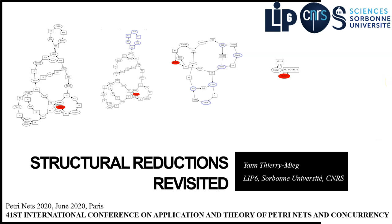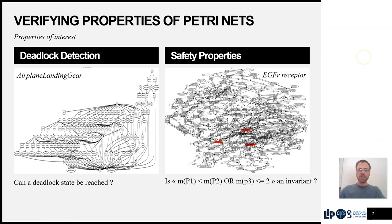Hi, I'm Yann Thereming and I'll be presenting this paper entitled Structural Reductions Revisited. We're interested in checking properties of Petri Nets. For instance, does my net contain a deadlock or can this equation be an invariant of the Petri Net?